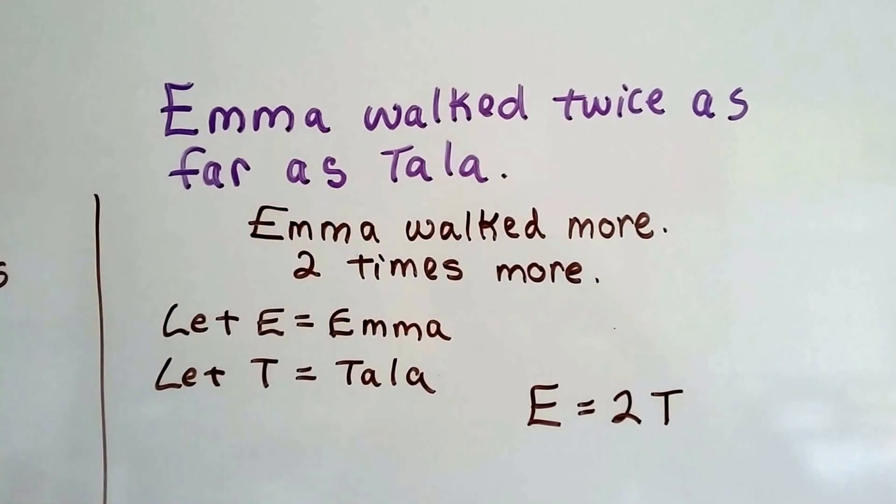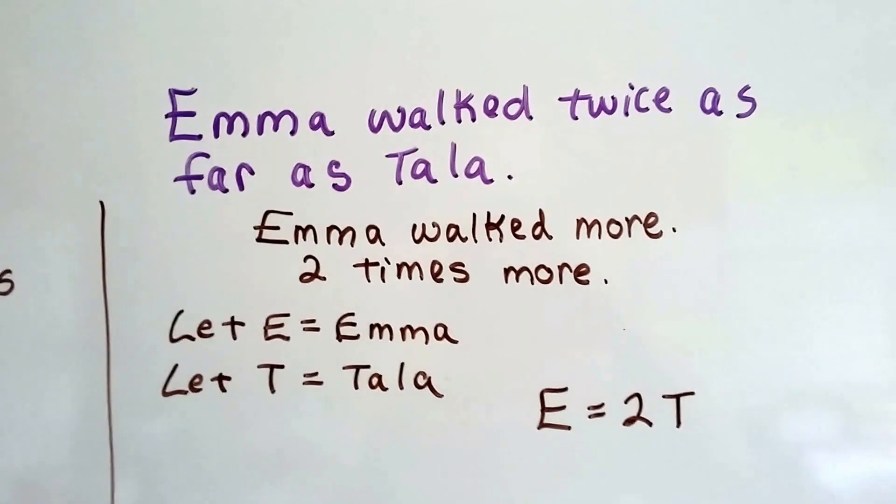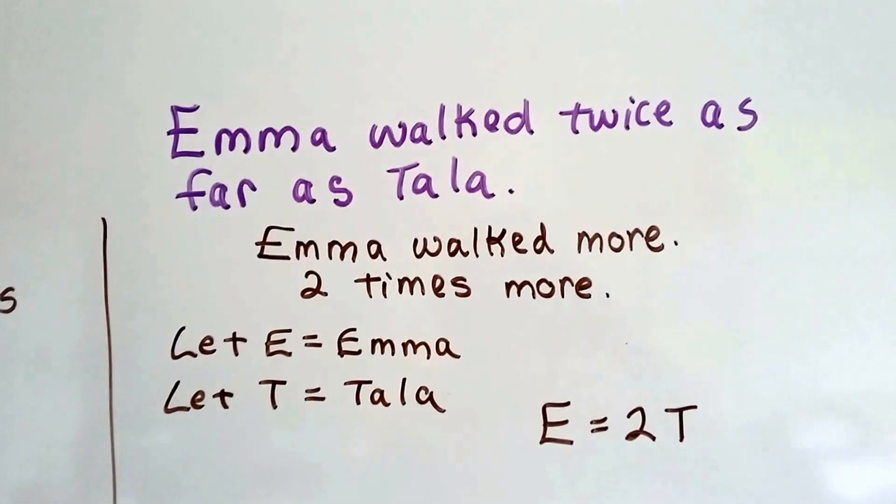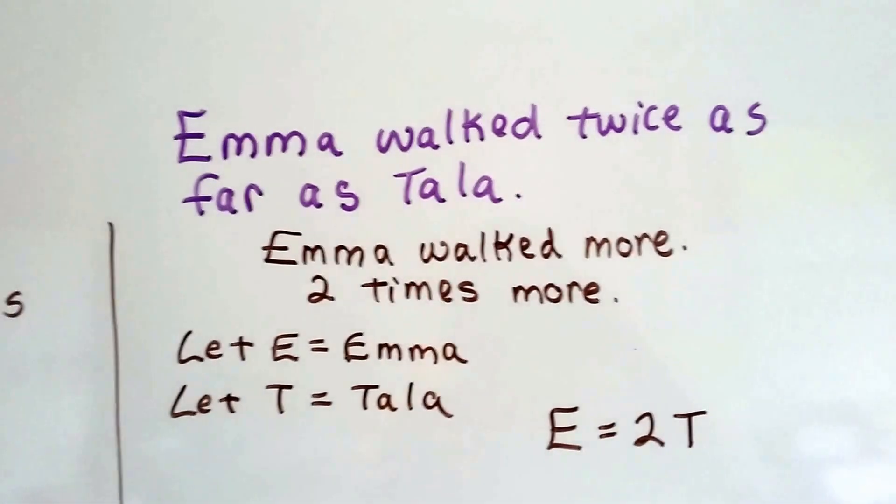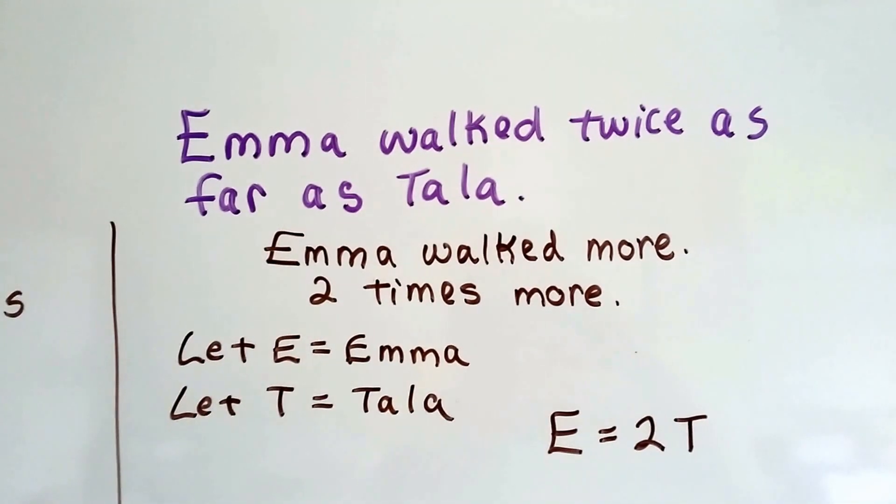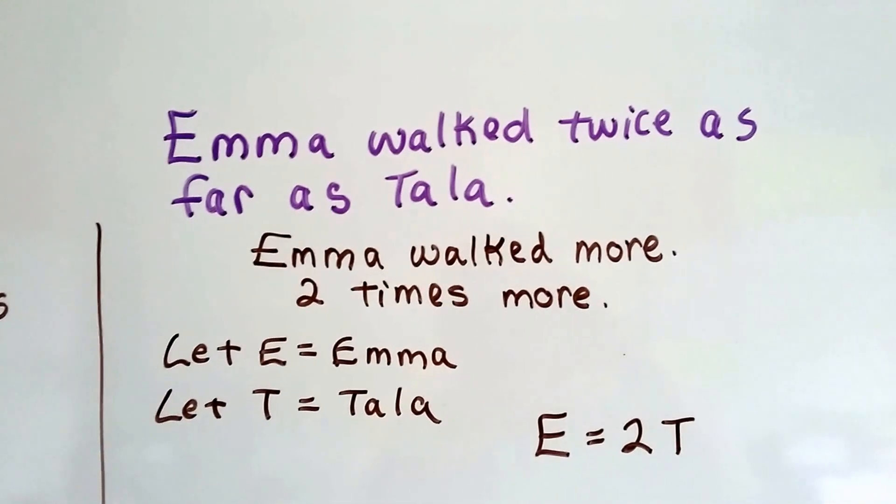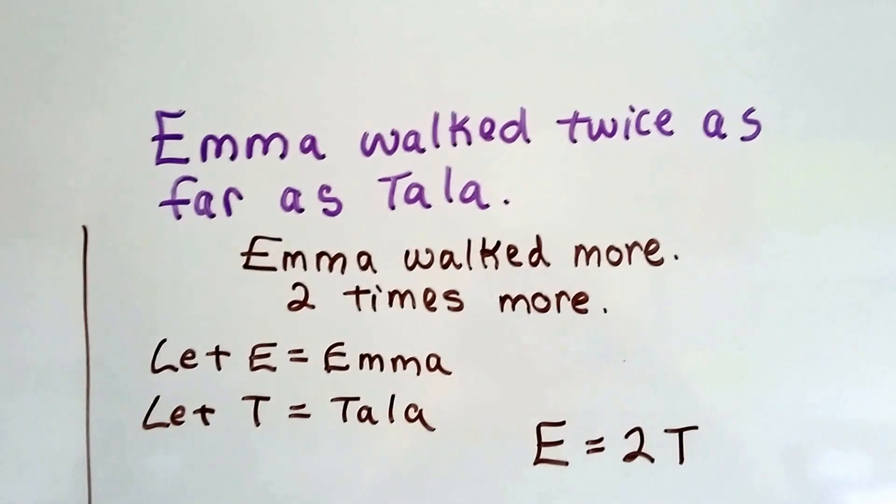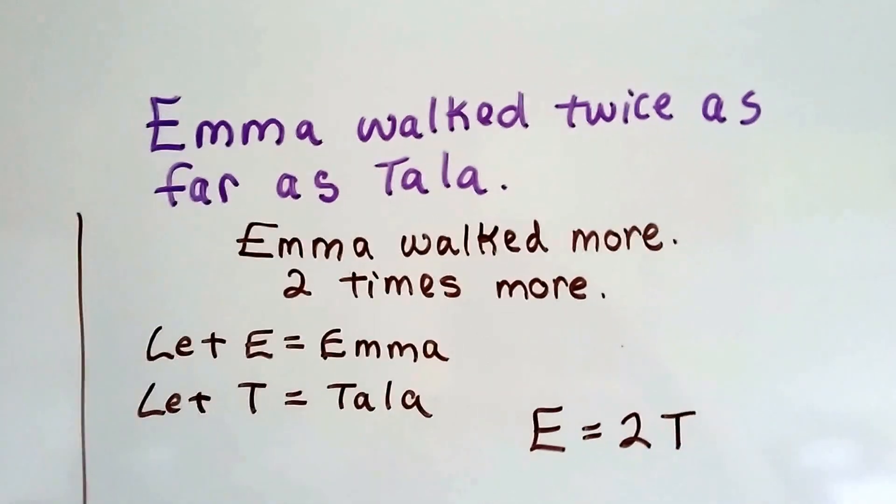Emma walked twice as far as Tala. Well, that means Emma walked more, 2 times more. It's twice as much. So if we let E equal Emma and T equal Tala, our equation is Emma is equal to 2 Talas. E equals 2T. We can keep track of who's who because of the E and the T.